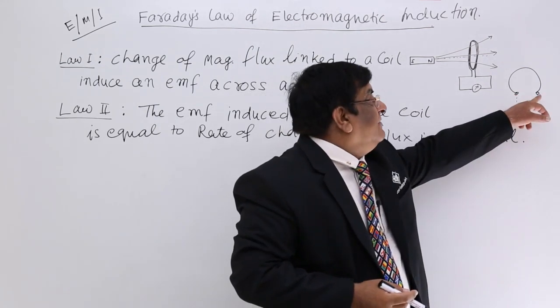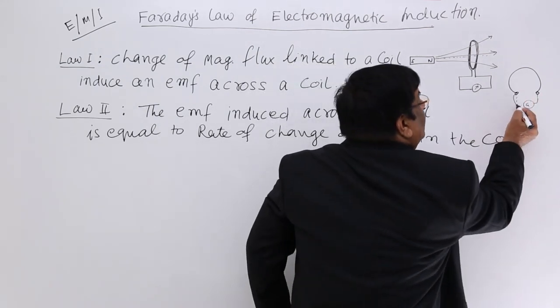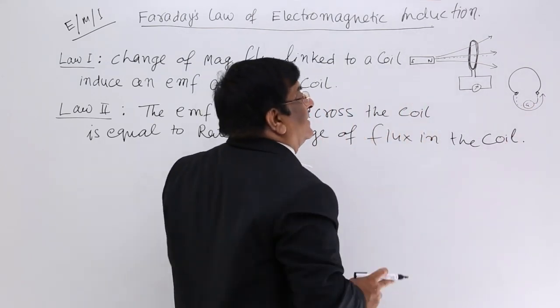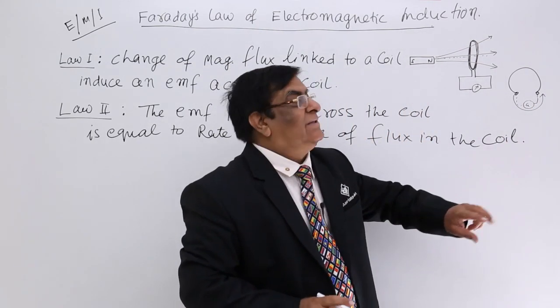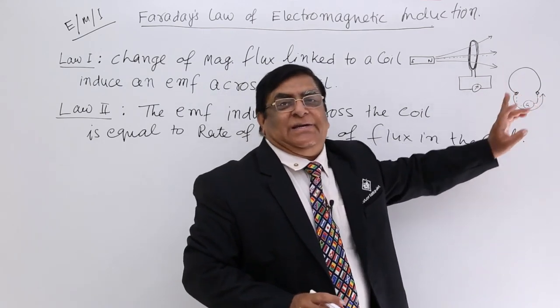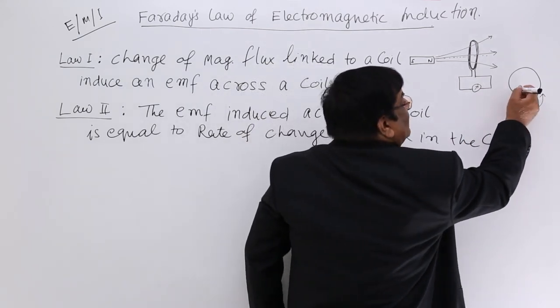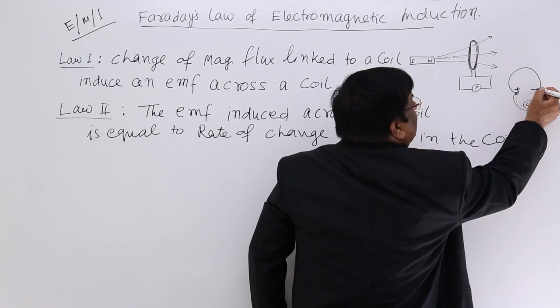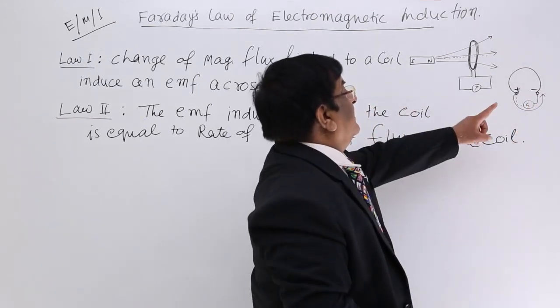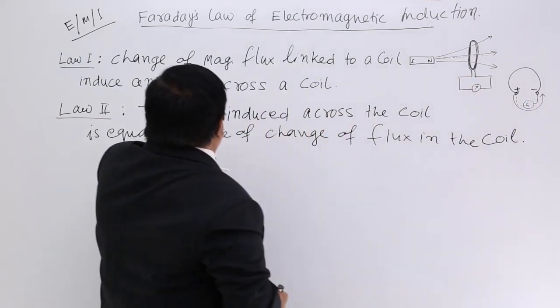If there is a path given to it, the current will flow through it. But unless we give a path, there will be an EMF generated. One terminal will become positive, one will become negative. And if we join them, current will flow through it.